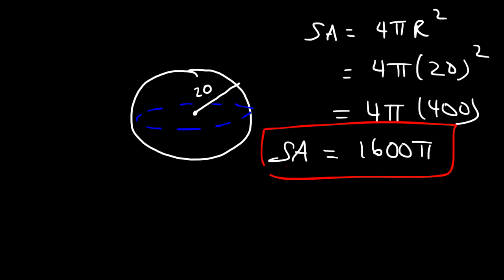Let's get that answer as a decimal. And so 1,600 pi is equal to 5,026.5 square inches.